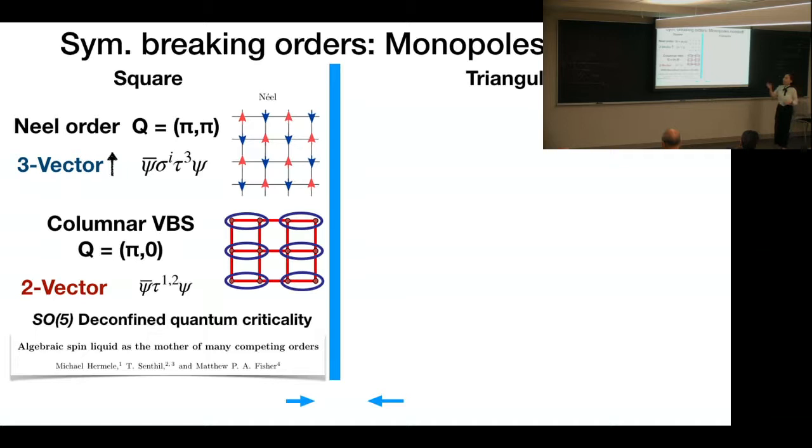What are the symmetry-breaking orders that we are looking at? On square lattice, it's the traditional familiar Néel order, which is described by the three-vector that's rotated under the SO(3) spin, and also a two-vector that's describing this columnar valence bond solid. So previous work has identified certain fermion bilinears that transform exactly as the order parameter of these two symmetry-breaking phases.